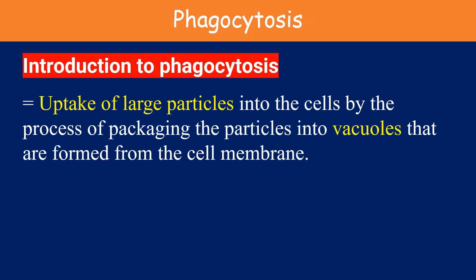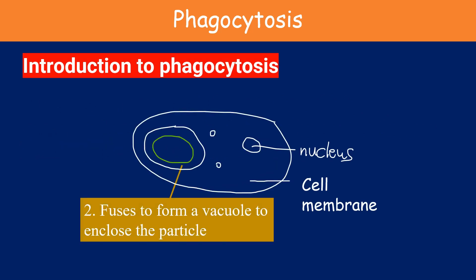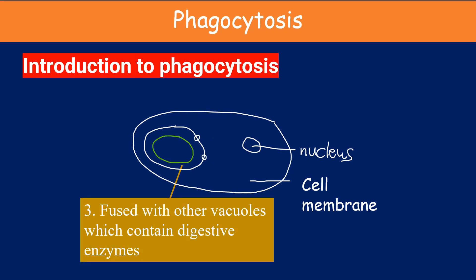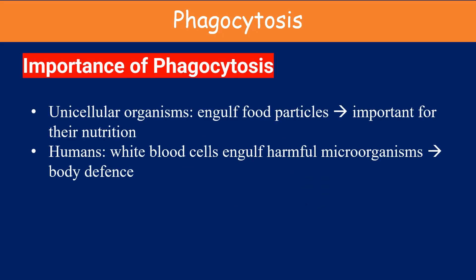Phagocytosis is the uptake of large particles into the cells by packaging the particles into vacuoles that are formed from the cell membrane. First, pseudopodia are formed to surround the particles to be taken in. The cell membrane fuses to form a vacuole to enclose the particle. Afterwards, the vacuole containing the particle will fuse with other vacuoles that contain digestive enzymes. With the help of enzymes, the particle is broken down and digested, then absorbed into the cytoplasm. Unicellular organisms engulf food particles — this is important for their nutrition. Humans have white blood cells that engulf harmful microorganisms for body defence.